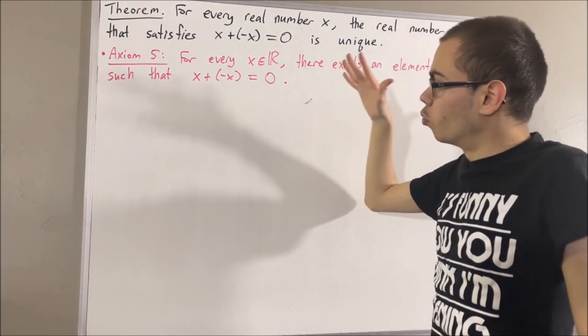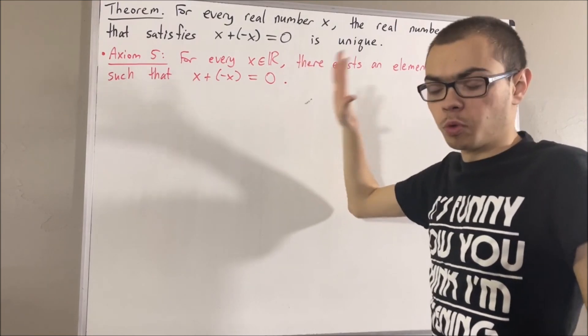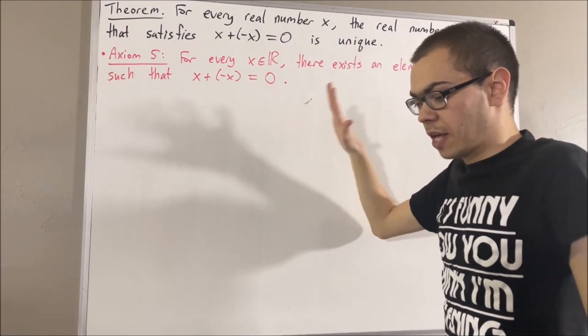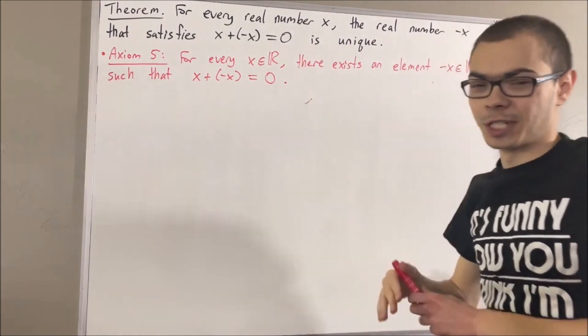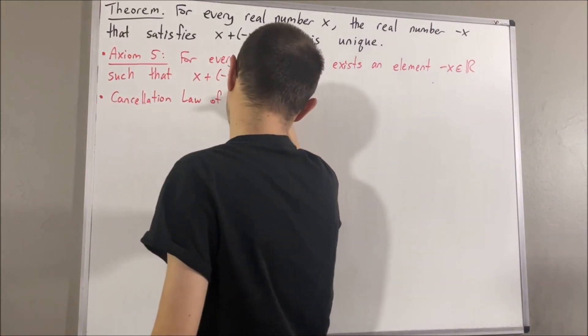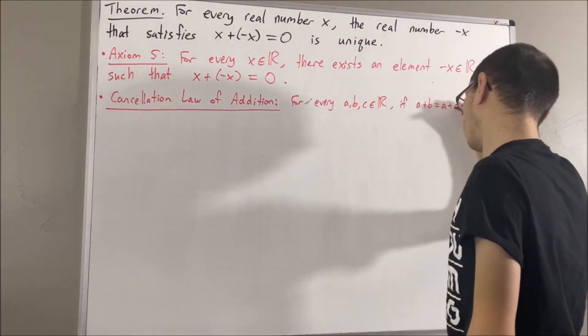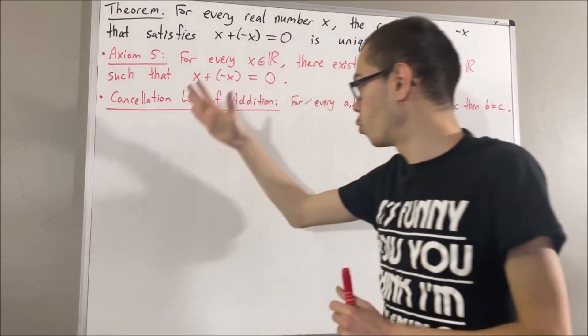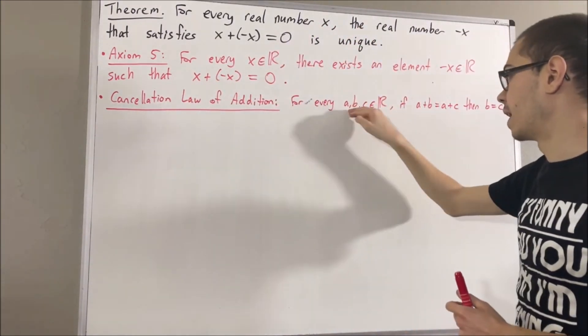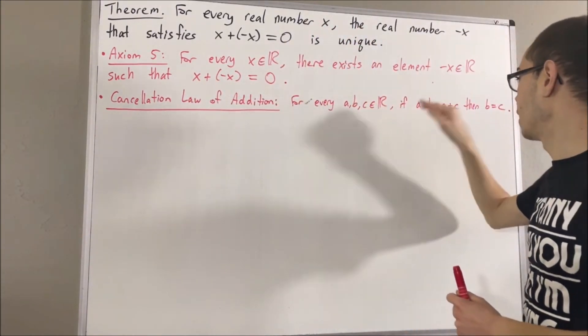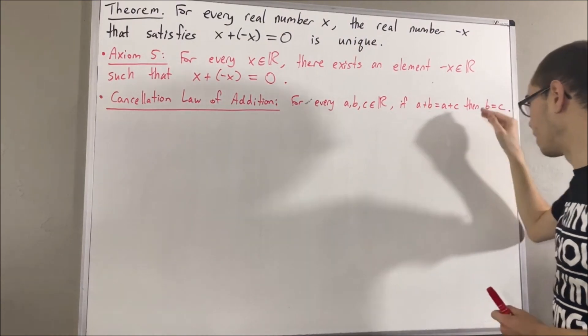And to prove that, we're going to be using a property of the real number system that we have proven, and that is the cancellation law of addition. So, we have proven for every real numbers a, b, and c, if a plus b equals a plus c, then b is equal to c.